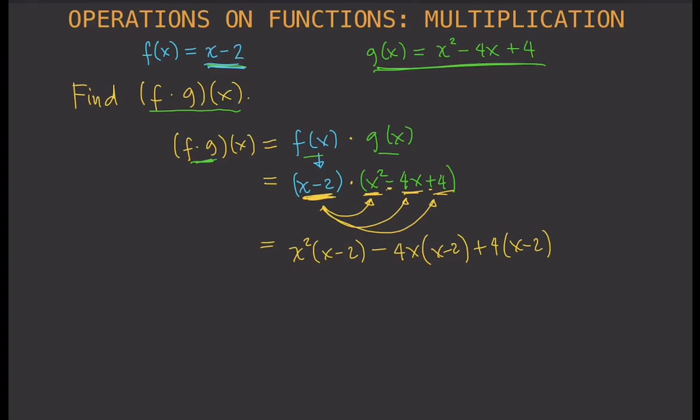I'll distribute: x² times x is x³ minus 2x², minus 4x² (that's -4x times x), then minus 4x times -2 is positive 8x, and then I'd have +4x - 8. All that's left to do is simplify and combine the like terms.